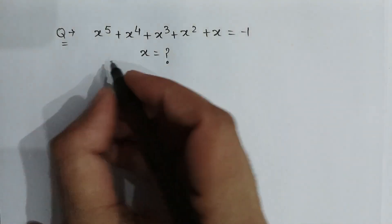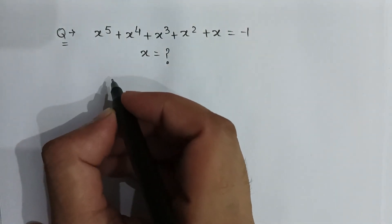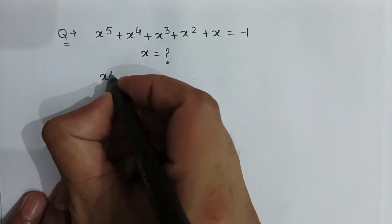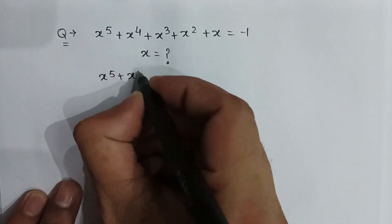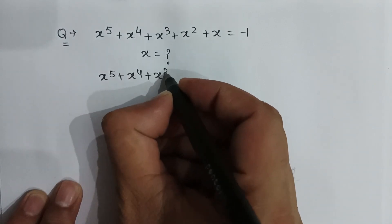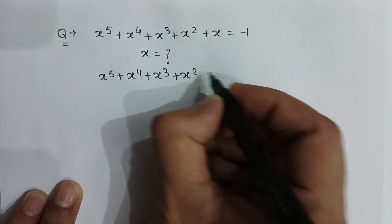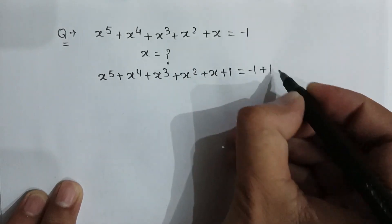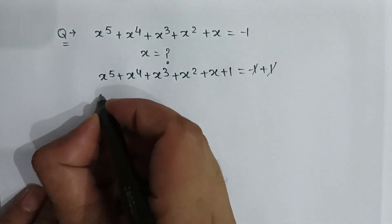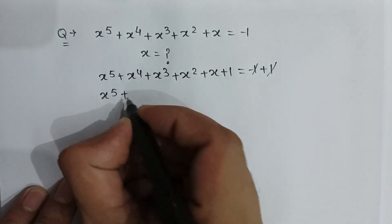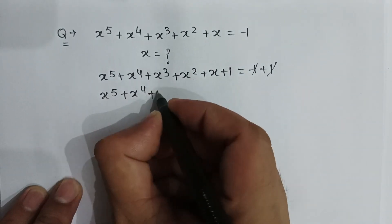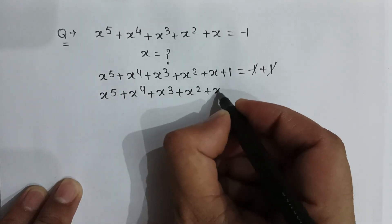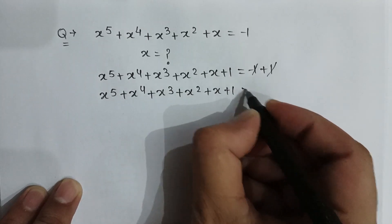If we add 1 to both sides, then it will be x to the power 5 plus x to the power 4 plus x to the power 3 plus x squared plus x plus 1 is equal to minus 1 plus 1, which cancels out. So it will be x to the power 5 plus x to the power 4 plus x to the power 3 plus x squared plus x plus 1 is equal to 0.